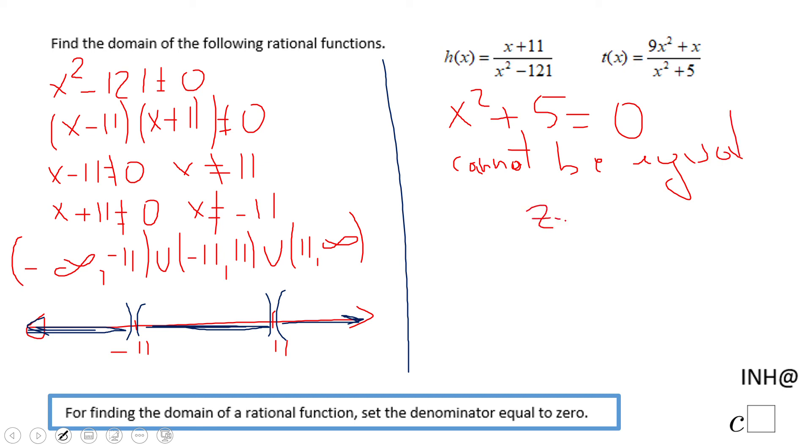Because we have something squared, x squared, plus five, that will always be greater than zero. So the domain here is any real number. So we have negative infinity, infinity. This is the interval notation. On the number line, you're going to have to shade the whole line. That's the idea of this problem.